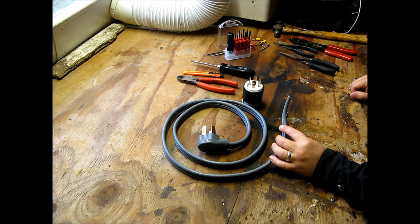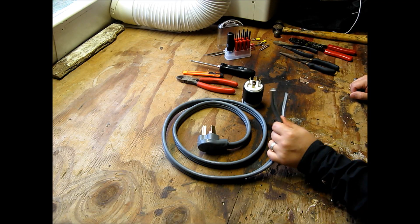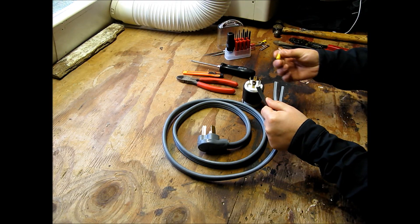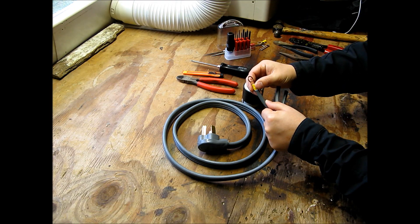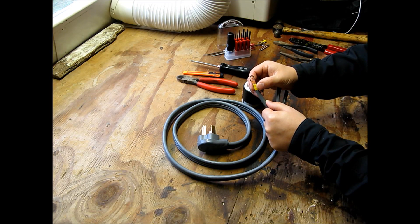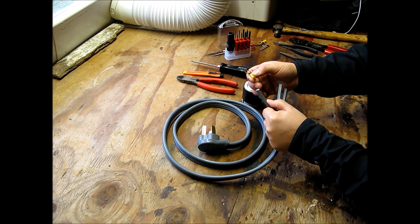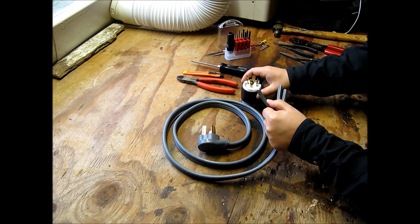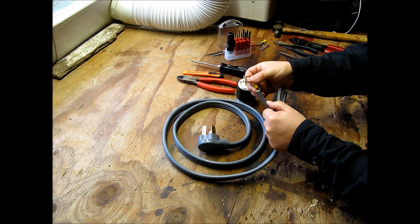So to begin the project, what I did first is I removed the ring terminals on the end of the dryer cord. Basically, the dryer cord comes with these so that it's easily attached to the back of the dryer. But in this case, we're not going to need them.